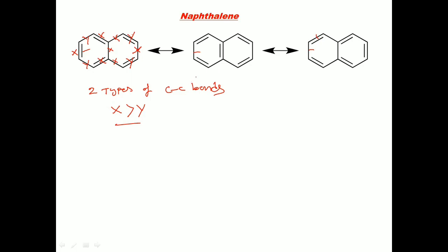Among the three resonant structures, which resonant structure is more stable? From Fry's rule, if any molecule has a greater number of resonant structures, it has greater stability. Among the three resonant structures of naphthalene, the one with the most delocalization is the most stable.